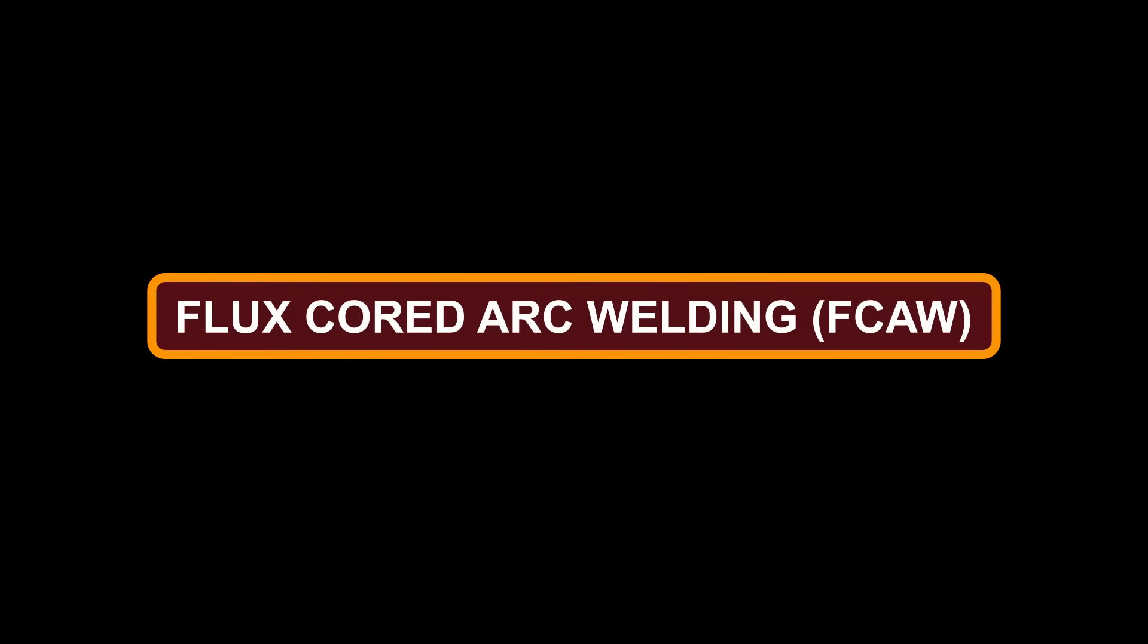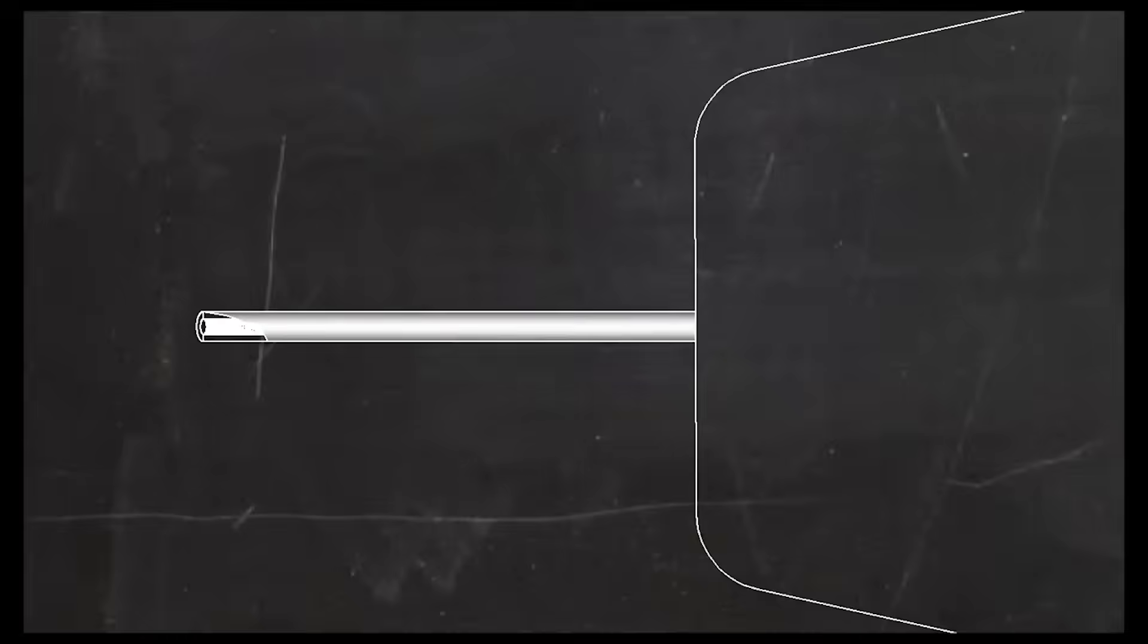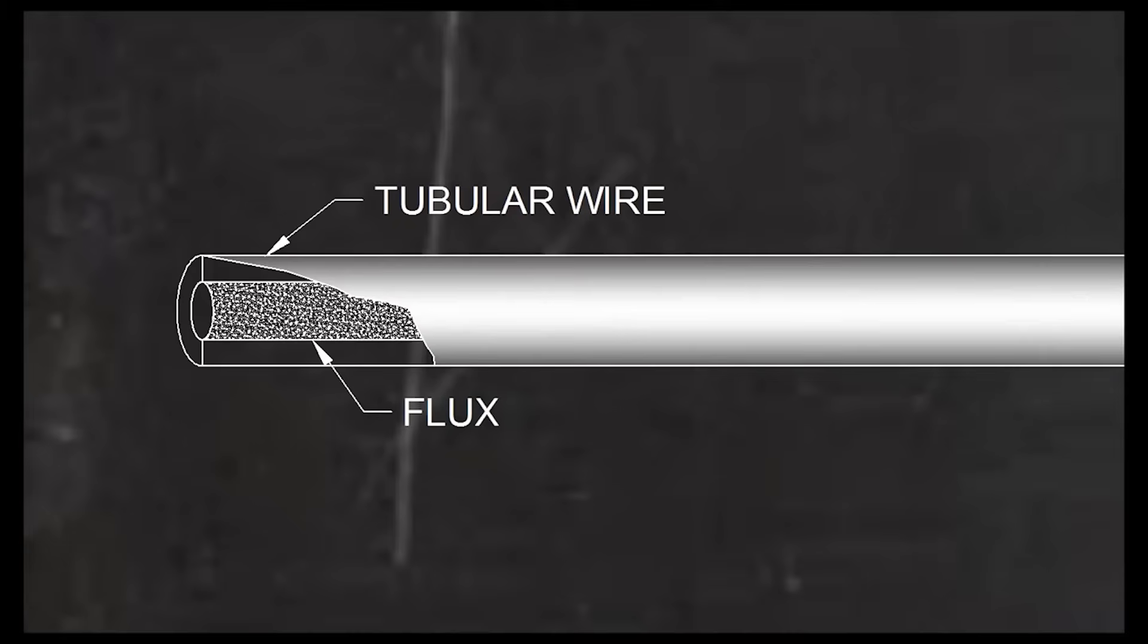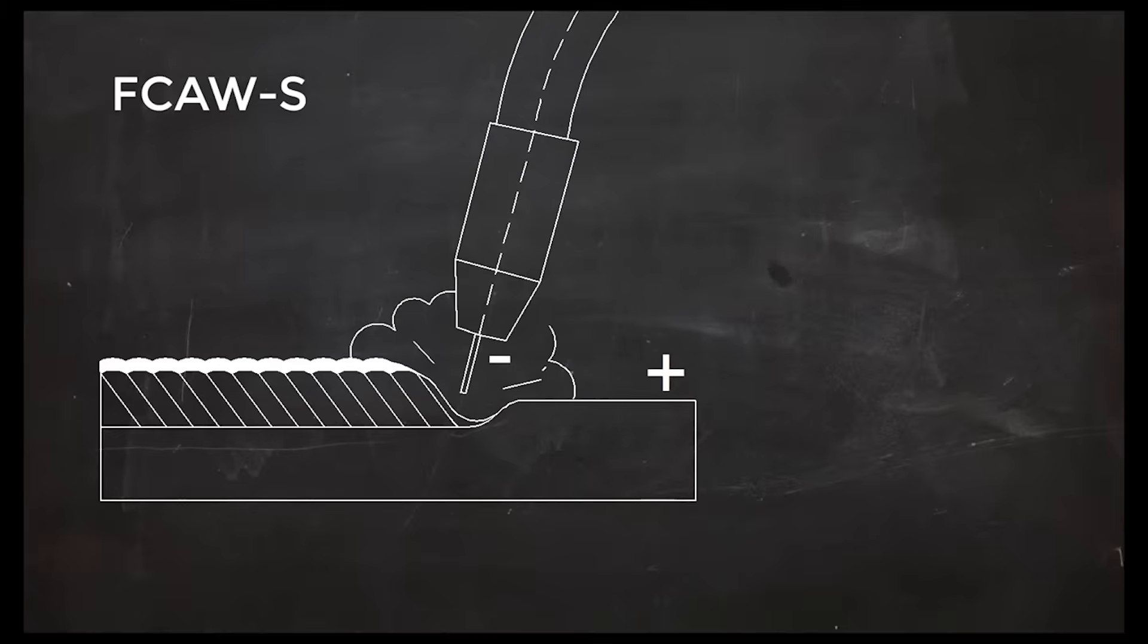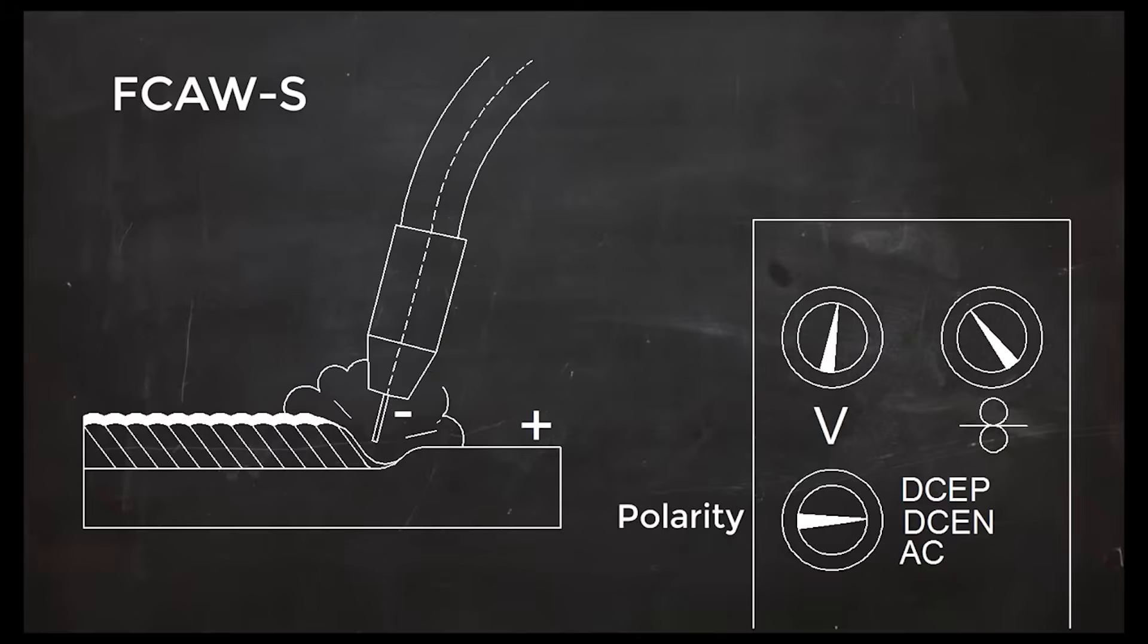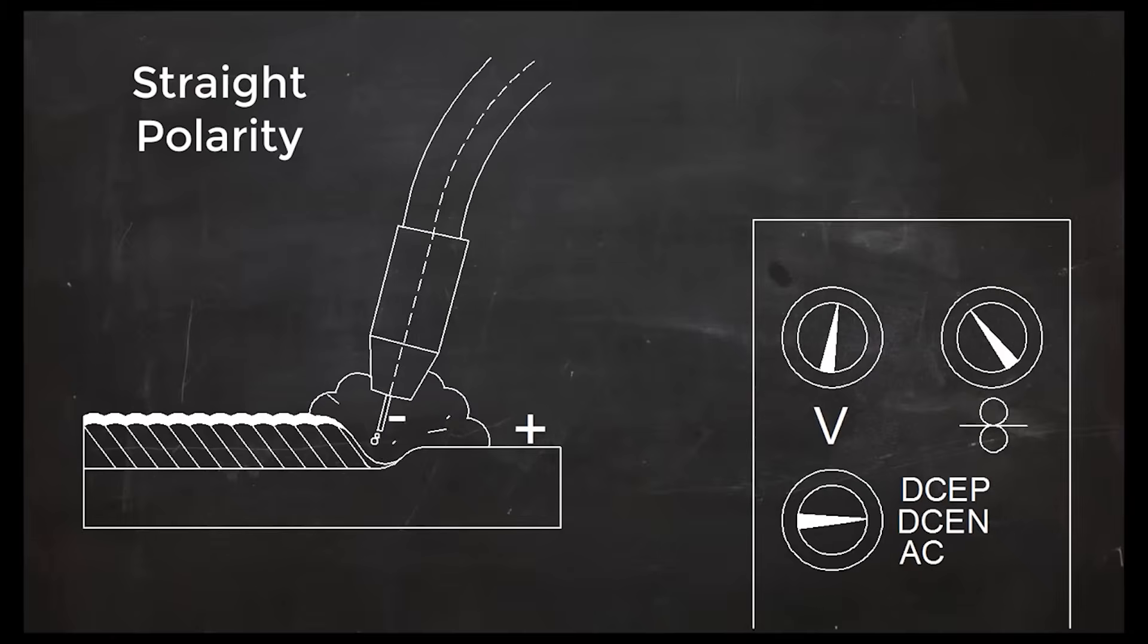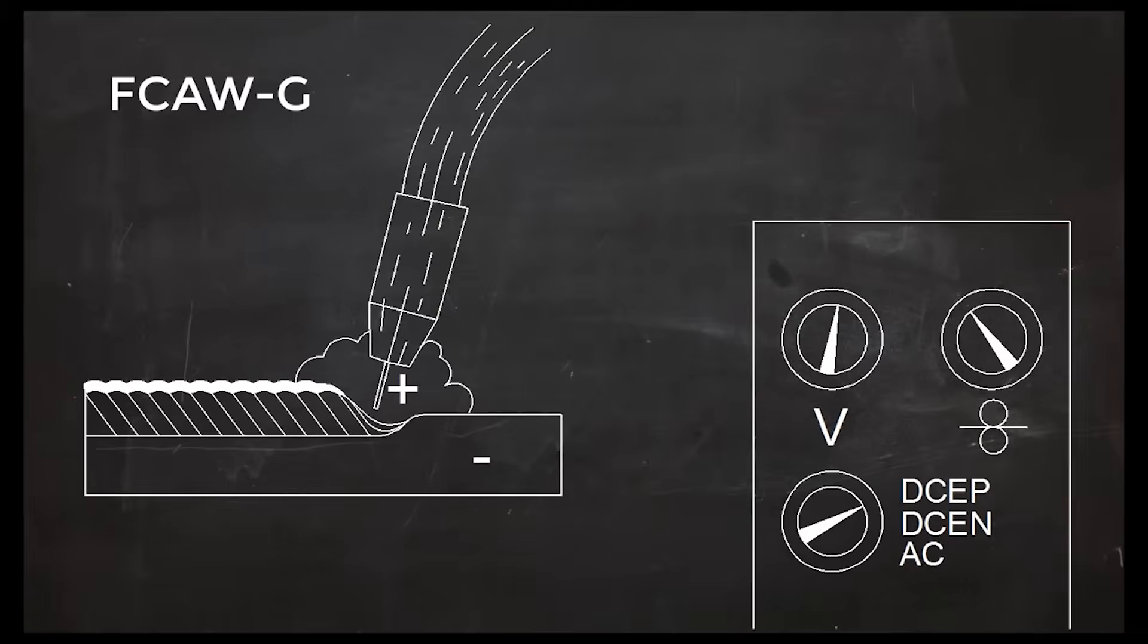Flux Core Arc Welding, created as an alternative to shielded metal arc welding, uses a continuously fed consumable flux core electrode and a constant voltage power supply, which provides a constant arc length. This process either uses a shielding gas or just the gas created by the flux to provide protection from contamination.